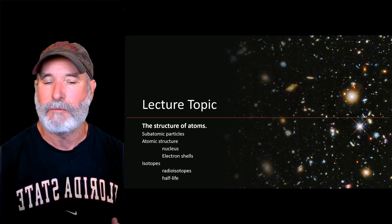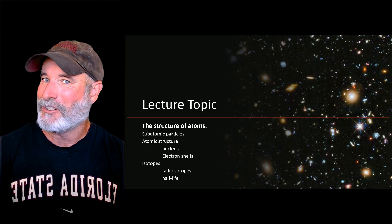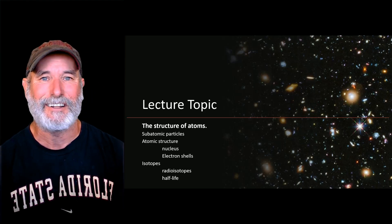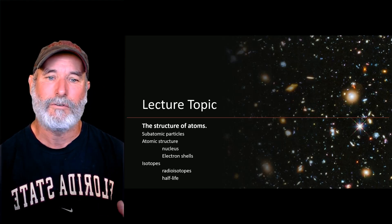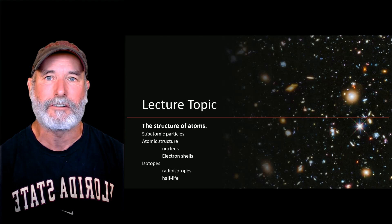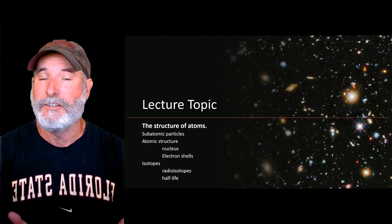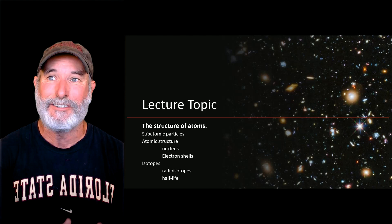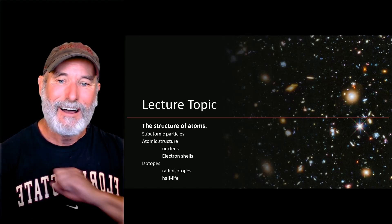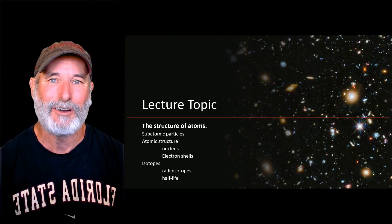So I'm not going to get into a lot of detail here, but this is going to be a brief overview. I'm going to introduce the subatomic particles, atomic structure, like the nucleus and electron shells. And then I will discuss briefly isotopes, including radioisotopes, their half-lives, and why we can use those. I did my PhD using a lot of isotopes, so I have a soft spot for using isotopes in science.